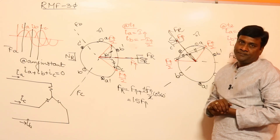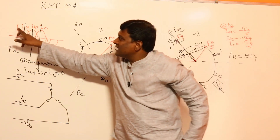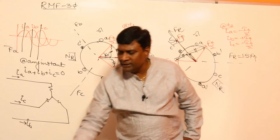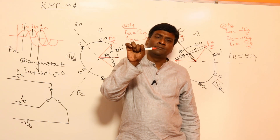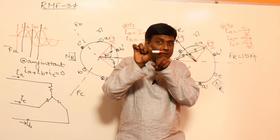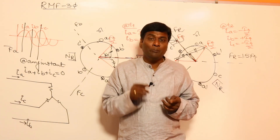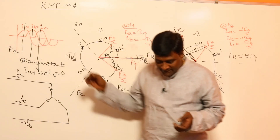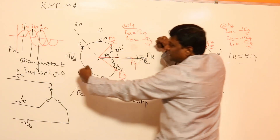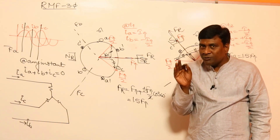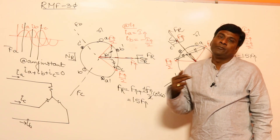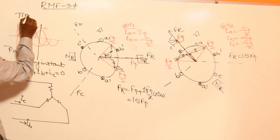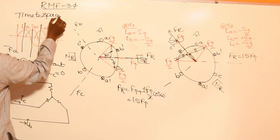This demonstrates the time-to-space concept. In time, from Ia maximum to Ib maximum is 120°. In space, the resultant MMF rotated by 120°. So if you wait 120° in time, in space the resultant MMF rotates by 120°. This is the time-to-space relationship — time to space.